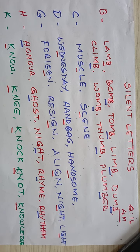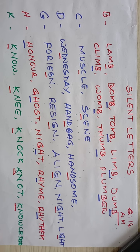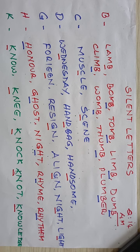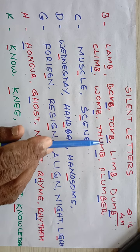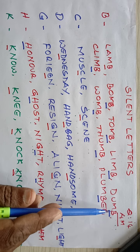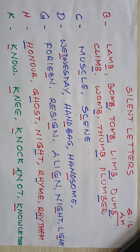These letters are silent when we read. Writing, we can't maintain silence, but in reading we can. B is silent in certain words like lamb, bomb, tomb, limb, damn, etc. All other words have a list. Whenever you have any doubt, just play this video back and listen to it again and you will understand.